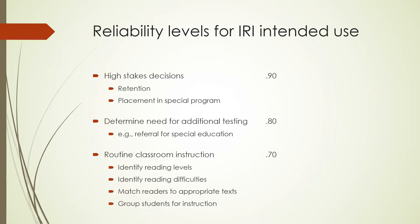To determine the need for additional testing — for example, a referral for special education — .80. And for routine classroom instruction, reviewers say that .70 is adequate: to identify reading levels, identify reading difficulties, match readers to appropriate texts, and group students for instruction. Since you as reading teachers will be working primarily in the latter, you should keep in mind that you want to see at least a .70 reliability in any informal reading inventory you're going to use.